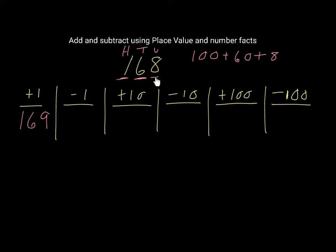If we subtract 1 from 8, that means the units digit, which is 8, will become 7. So that means we have 167. Make sure that you understand that the digit 1 and the digit 6 don't change — they stay exactly the same, because we are not looking at the 10s or the 100s, we're just looking at the units.